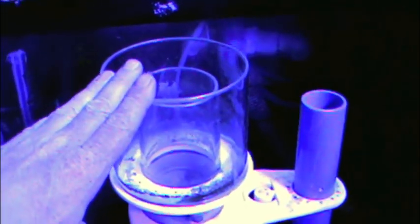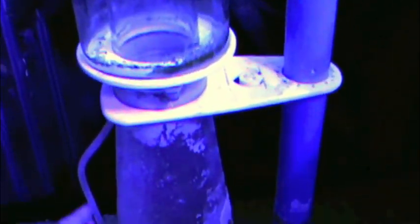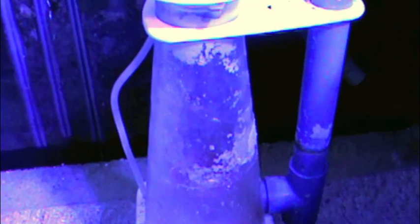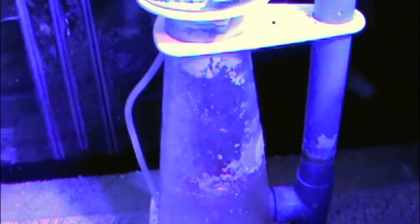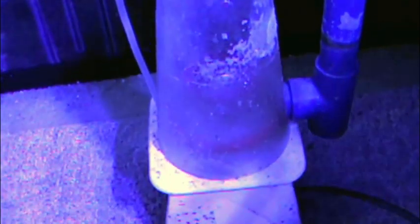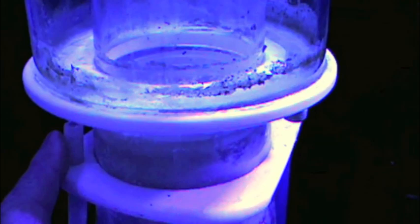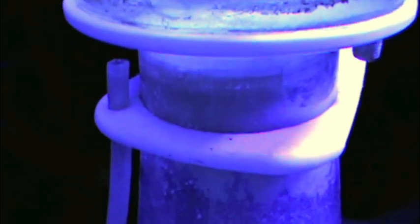What we have here is the collection cup, the main chamber. This is where the bubbles accumulate, come up to the surface, and attract that protein. Down below, we've got the pump down here. This little line that you see here goes all the way up. That's your air inlet line. That's where your bubbles are generating from.